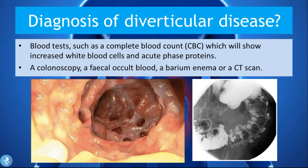A colonoscopy can be done to diagnose diverticular disease — you can see multiple pouches coming out of the colon wall on the colonoscopy image. A fecal occult blood test can detect the presence of blood in the stool. A barium enema, shown here on the right, involves barium entering the pouches followed by x-rays, revealing the abnormal appearance of diverticula in the colonic wall. A CT scan can also be done to confirm the diagnosis.